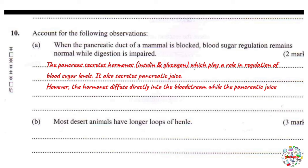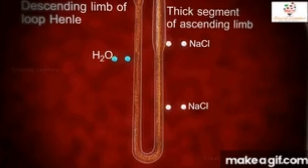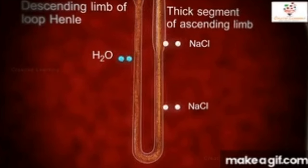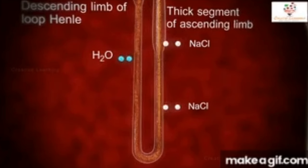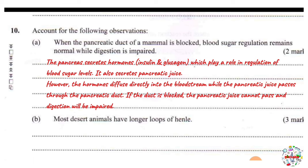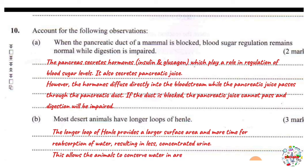Part B: most desert animals have larger loops of Henle. The loop of Henle is a U-shaped part within the nephron, whose main function is reabsorption of water and mineral salts. Desert animals need to reabsorb as much water as possible because they live in environments with scarce water — they cannot afford to lose much water through urine. They must excrete very little, highly concentrated urine. Desert animals therefore have larger and longer loops of Henle to increase the surface area for maximum reabsorption of water and mineral salts.